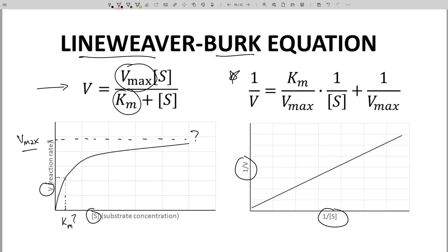So the Lineweaver-Burke equation fits y equals mx plus b. The y-axis, or the y values, are 1 over V. The x-axis, the x values, are 1 over S. The slope m is Km over Vmax. The y-intercept b is 1 over Vmax.